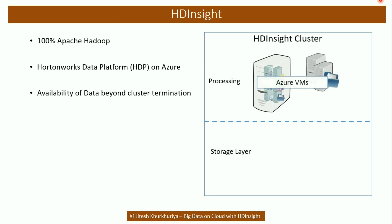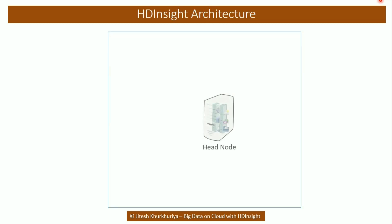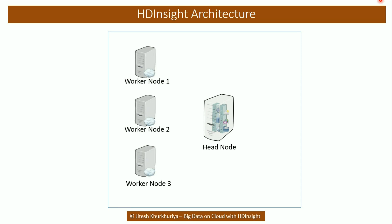You have virtual machines on the Azure platform where HDP has been installed as-is. The only difference is that Azure Data Lake or Azure Storage such as Blob is used for data storage instead of standard HDFS. In an HDInsight cluster, you have the head node, or master node, which keeps track of all the worker nodes and what's happening in the entire cluster — it's like a ringmaster or orchestrator of the entire system.